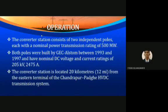The station has nominal DC voltage and current ratings of 205 kilovolt and 2475 amps. The converter station is located 20 kilometers from the eastern terminal of the Chandrapur HVDC transmission system, and the length is approximately 12 miles.